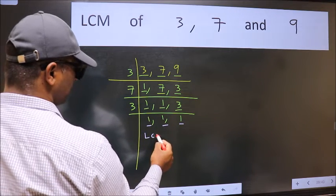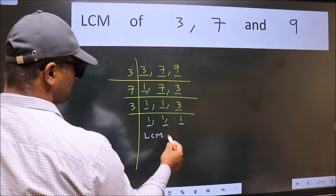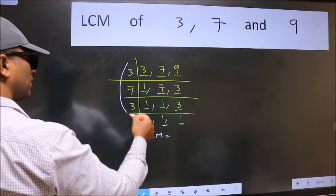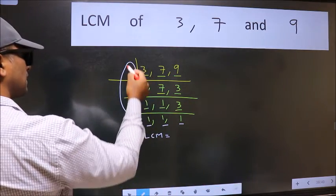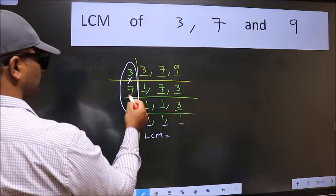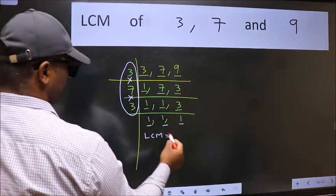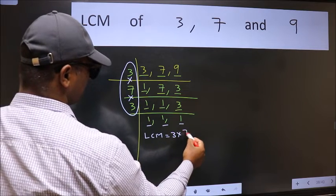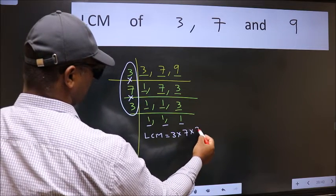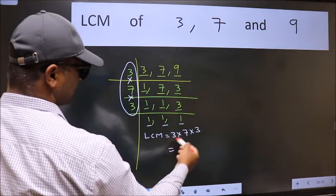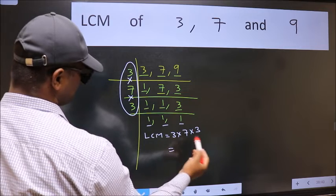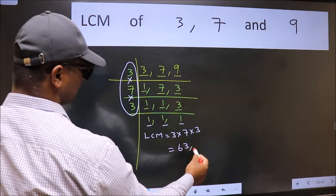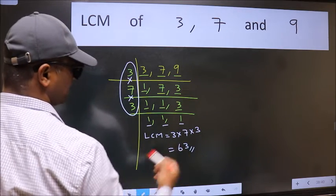So our LCM is the product of these numbers. That is 3 into 7 into 3. When we multiply these numbers, we get 63. So 63 is our LCM.